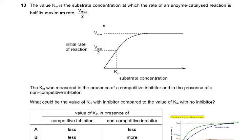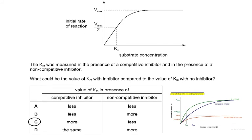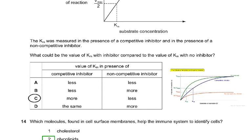Question thirteen: Km is the substrate concentration at which rate equals Vmax/2. The question asks how Km changes in the presence of a competitive inhibitor versus a non-competitive inhibitor. Using the provided diagram showing all three curves — uninhibited, competitive inhibitor, and non-competitive inhibitor — the answer is C. Pause and study this graph carefully to understand how Vmax and Km change under each type of inhibition.